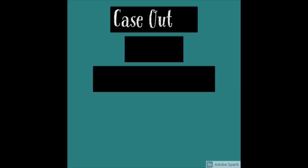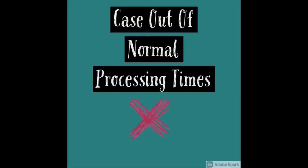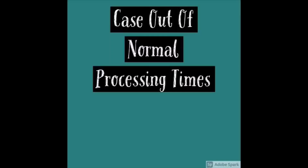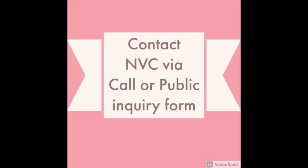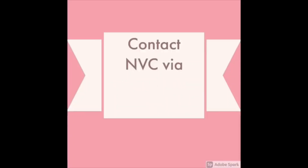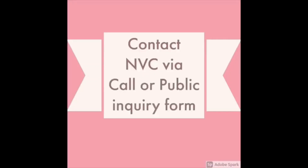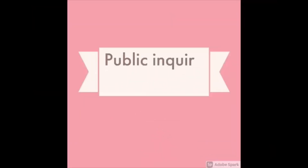If your case is out of normal processing time — that is, your case should have been processed according to the timeframe given by NVC on their site, however it is still behind the normal processing time posted by NVC — there are two ways to address this issue: number one, contacting them via email, and number two, contacting them via phone number. Let's look at method number one, that is via email.